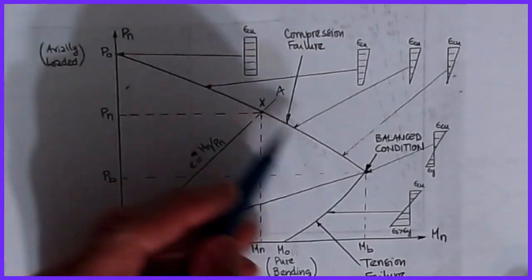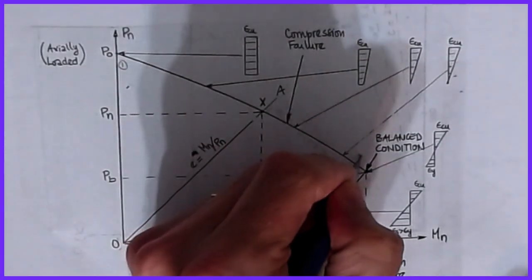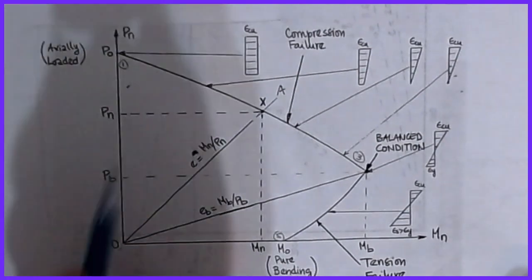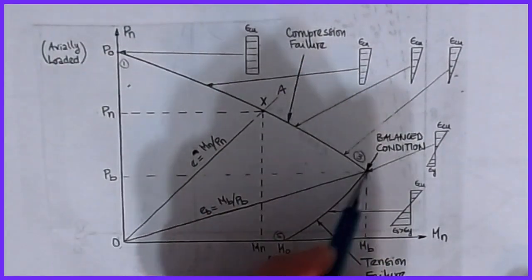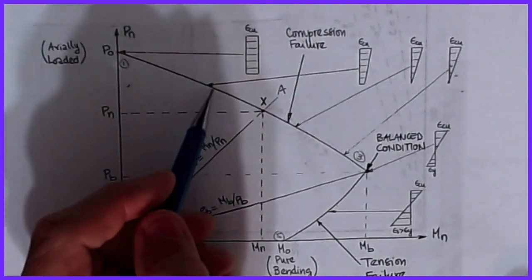So this was point 1, this would be point 3, and this would be the fifth point. This is my pure axial, this is my balance, and this is my nominal moment. What we look at is we start to look at that, and then the other two points are between one and three, and the other one between three and five.